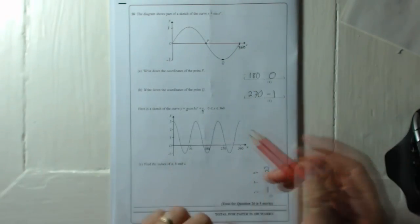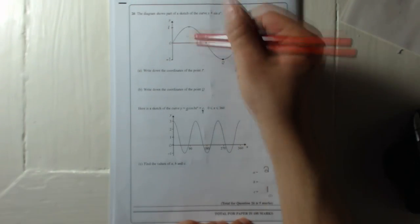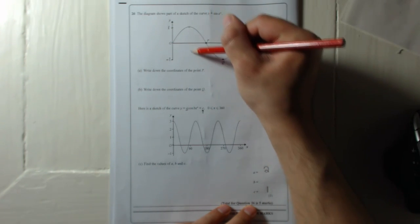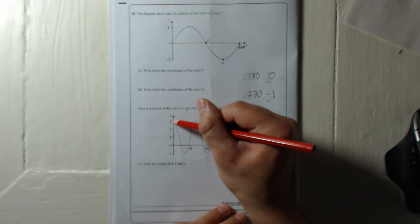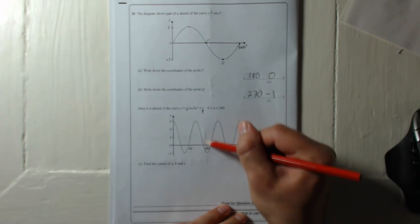Now if you look at this, remember we said the cosine curve starts up there, gets down to the bottom by halfway, and back up to the top. Well, this does that once, twice, three times in between 0 and 360.